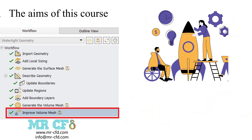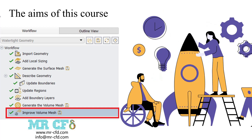After mesh generation, we will check the mesh quality and improve it if necessary. This involves checking for issues like skewness, orthogonality, and aspect ratios. We will show you how to refine the mesh in critical areas to improve the accuracy of your simulation results.